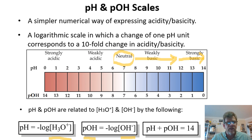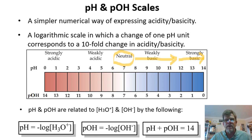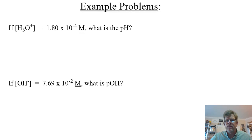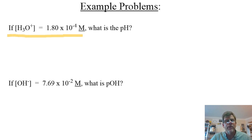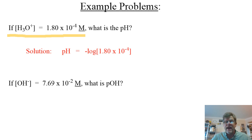We can very easily use these expressions for some example problems. For instance, if the hydronium ion concentration of a solution is 1.8 times 10 to the minus fourth molar, what is the pH? Just take that number, put it into your calculator, punch log, and then take the negative of it. The answer that comes out is 3.74. If we look at hydroxide ion concentration — if my hydroxide ion concentration is 7.69 times 10 to the minus 2 molar — what is the pOH? Just take that number in your calculator, punch log, take the negative, and we get the pOH of the solution.